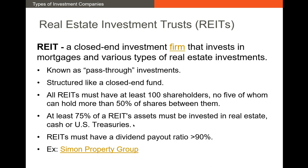REITs come with a couple of important requirements. In order for a managed fund to be considered a REIT, it has to have at least 100 shareholders, and no five of them can hold more than 50 percent of the shares between them. At least 75 percent of the assets have to be in real estate, cash, or U.S. Treasuries. And REITs must distribute at least 90 percent of any income they receive — whether from rent or mortgage payments — in the form of a dividend to shareholders.